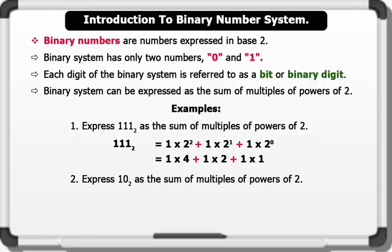2. Express 10 base 2 as the sum of multiples of powers of 2. Solution: 10 base 2. Let's multiply the powers of 2. Equals 1 times 2 raised to the power of 1, plus 0 times 2 raised to the power of 0. This gives us 1 times 2, plus 0 times 1.